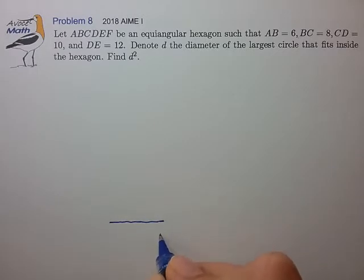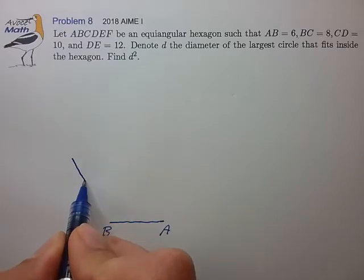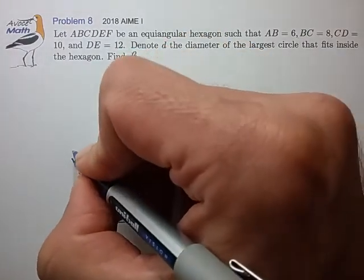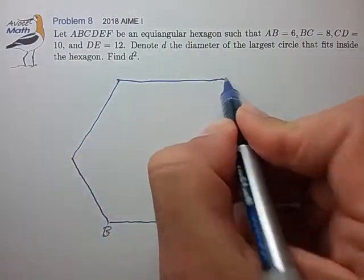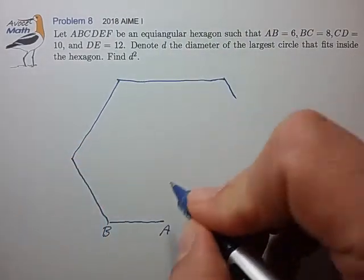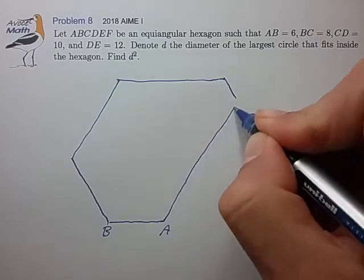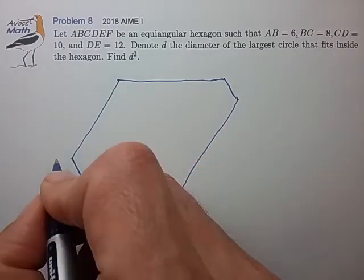Going from A to B, to C, to D, to E, to F, gives us something that looks like this.